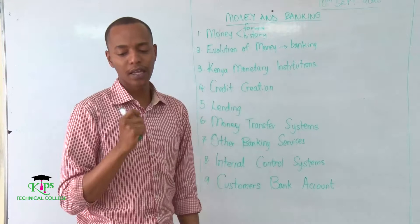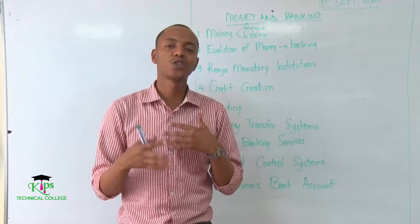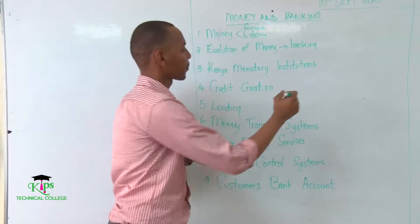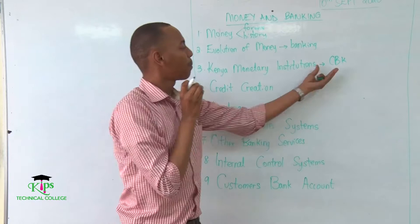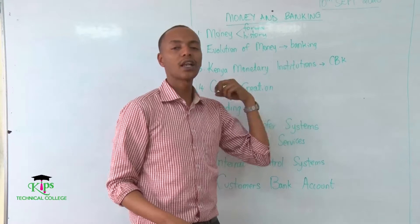Since we are doing our NEC exams, we really need to focus on Kenyan history. We'll then talk about Kenyan monetary institutions — these are the institutions that play a major role in deciding the control, supply, and demand for money. In this case we'll talk about the central bank, which controls all commercial banks, as well as commercial banks, SACCOs, and other chambers.